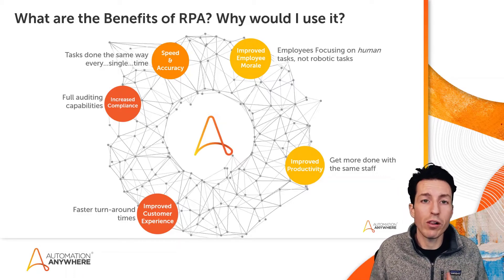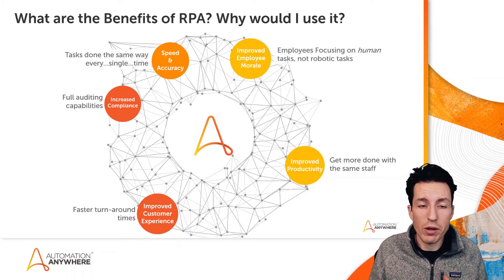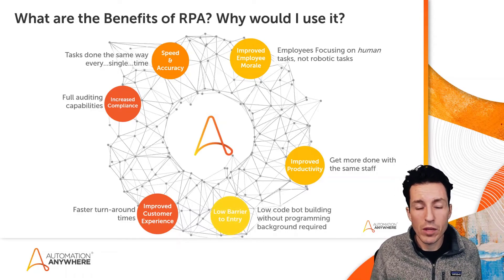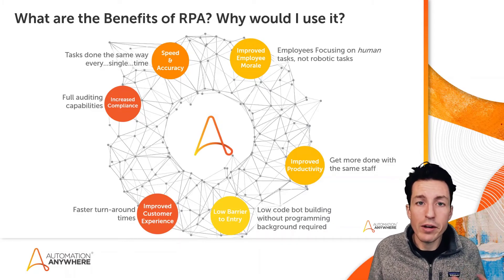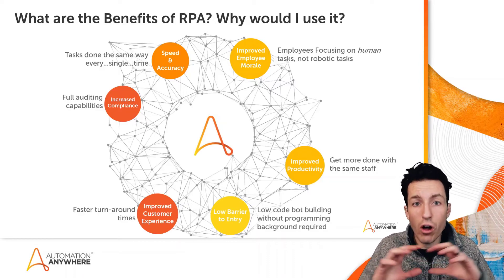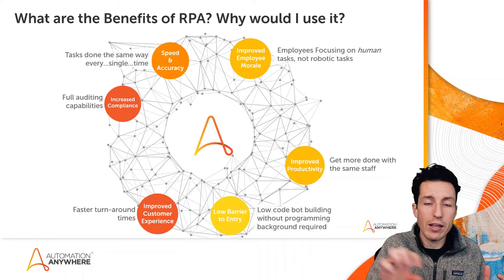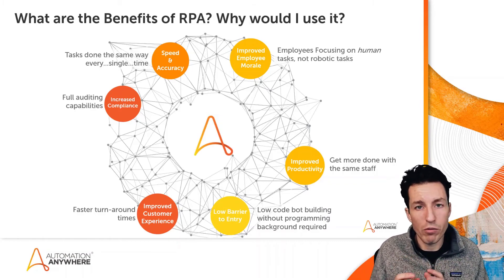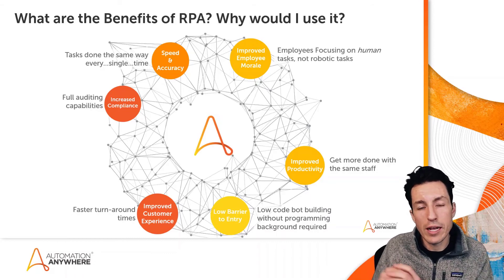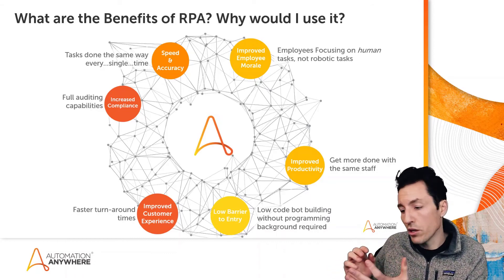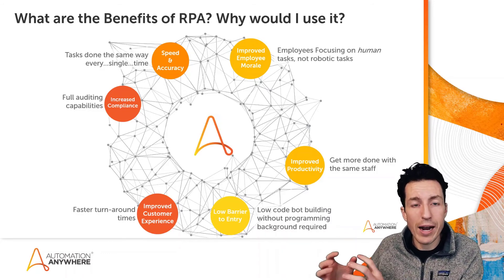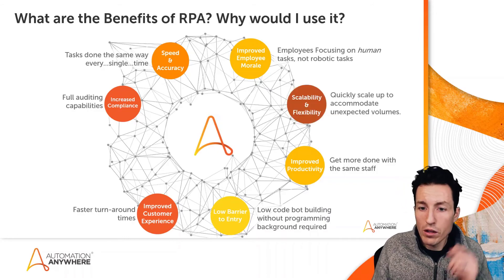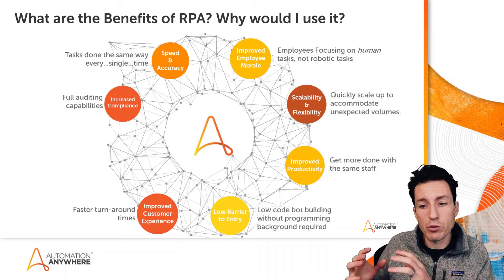We want to free humans from mundane, robotic tasks so they can focus on more cognitive tasks or tasks requiring emotional intelligence. Fifth, full auditing capabilities: increased compliance with internal audit requirements, doing things the same way every time, logging every action with a full history of what the bot has done. Sixth, a low barrier to entry: with Automation Anywhere, it's a cloud-native application with a web-based development interface — clicking and dragging actions, chaining them together. Business analysts can create their own bots, and advanced developers can write Python scripts, JavaScript, or custom Java packages.